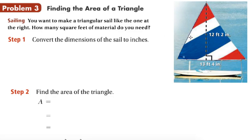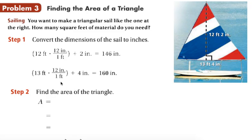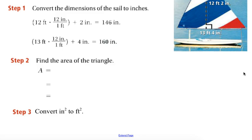Let's use that formula to find the area of the triangle in this sail. You want to make a triangular sail like the one shown. How many square feet of material do you need? First of all we have a mixture of units, feet and inches, so we want to convert everything to inches. Multiply your feet times 12 and then add the inches. This altitude is 146 inches, our base is 160 inches. The area of the triangle is one half the base times the height: 160 times 146 giving us 11,680 square inches.